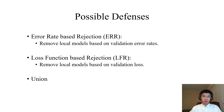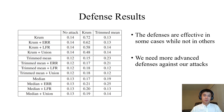We also consider possible defenses against our attacks. We assume the master owns a small validation dataset. Error rate-based rejection removes local models based on their impact on validation error rates, while loss function-based rejection removes local models based on their impact on validation loss. We further consider a combination of these two defenses. The results show that the defenses are effective in some cases but not in others, indicating that more advanced defenses are needed.